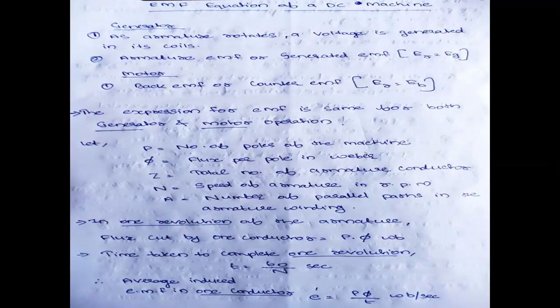Let us consider: P is the number of poles of the machine — bring the diagram of a DC machine to your mind and you will understand why we are considering these things. P is the number of poles, phi is the flux per pole in Weber (unit of flux is Weber), Z is the total number of armature conductors, N is the speed of the armature in RPM, and A is the number of parallel paths in the armature conductor. These five factors will be used to derive the EMF equation.